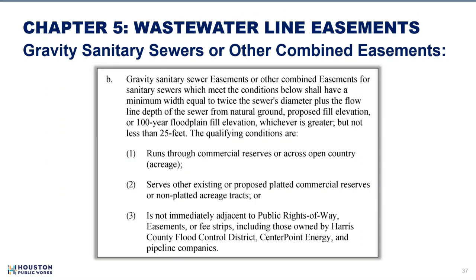The qualifying conditions for gravity sanitary sewer easements or other combined easements not adjacent to the public right-of-way has been updated. The qualifying condition used to include all three conditions. Now condition 3 — if the easement is not adjacent to the public right-of-way easement or P-strip — can be used as a qualifying condition alone. This is due to modifying 'and' to 'or' at the end of condition 2, allowing that third condition to stand alone. This concludes changes to sanitary sewer easements in Chapter 5.